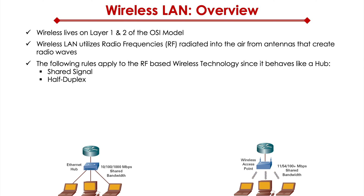Either it's sending something or it's receiving something — that's half duplex. The pictures at the bottom of the screen show on the left how a wired Ethernet hub looks, and on the right how the wireless access point operates. It's the same idea; the only difference is the medium.